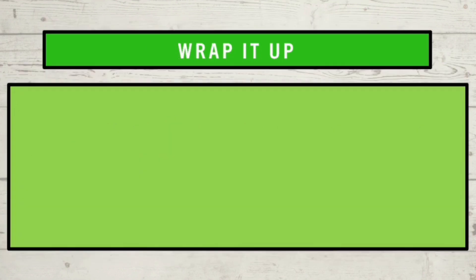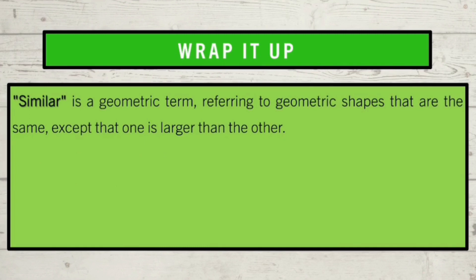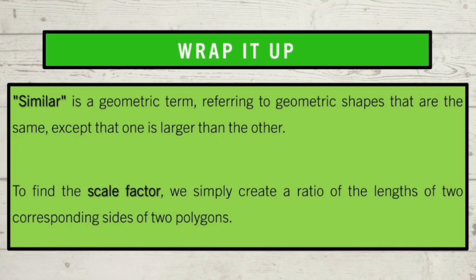Remember that proportion plays a very important role in determining measures of the corresponding parts of similar polygons. We can say that polygons are similar if their vertices can be paired so that corresponding angles are congruent and corresponding sides are proportional. To find the scale factor, we simply create a ratio of the lengths of two corresponding sides of two polygons. So we were able to learn about similarity of figures. That's all for now. I hope you learned a lot today. Till next time, keep safe!